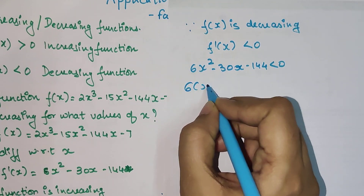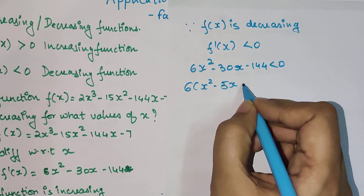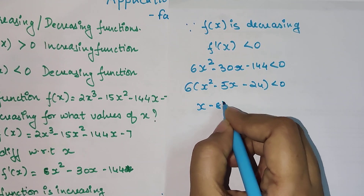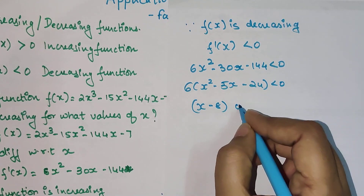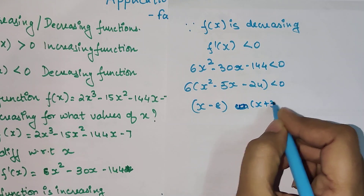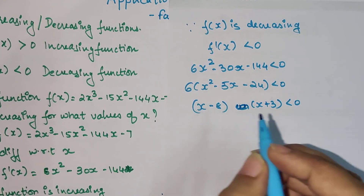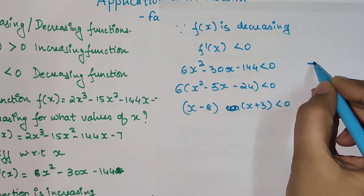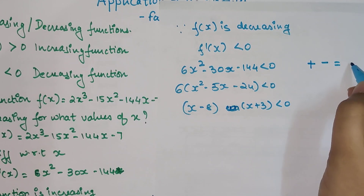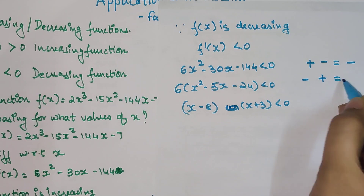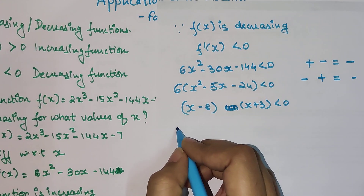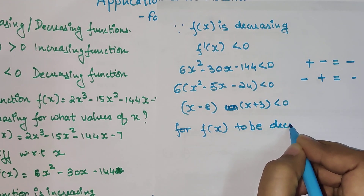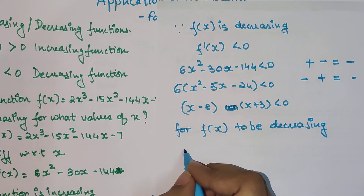Taking 6 as common, we get x² - 5x - 24 < 0. So we will have (x - 8)(x + 3) < 0. Now, we want the product of these two to be negative. That happens when the first is positive and the second is negative, or the first is negative and the second is positive. For f(x) to be decreasing: first scenario — x - 8 > 0 and x + 3 < 0.